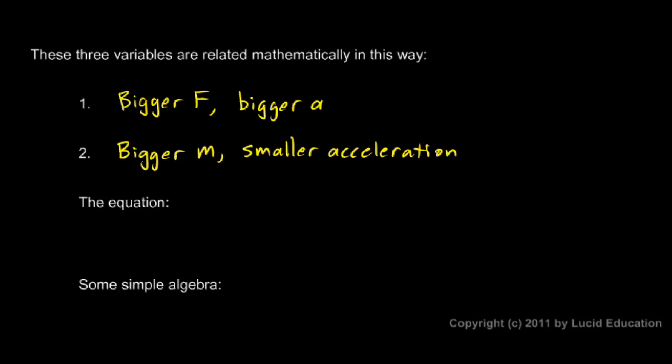A bigger mass will result in a smaller acceleration. And those ideas, those two ideas, can be expressed together mathematically in one very succinct equation. We write this: A is equal to F divided by M. And you should be able to see these two ideas in this equation. Imagine we're going to do the math here. We're going to take F and divide it by M. So think in this case, the way the equation is written here, think of F and M as your inputs.